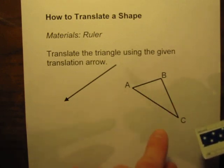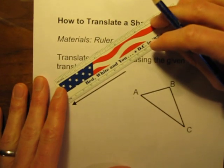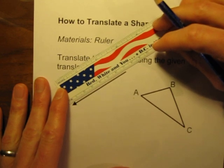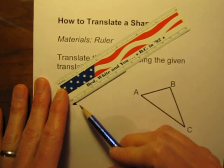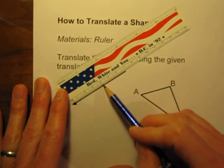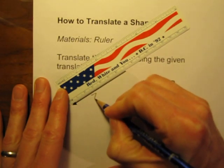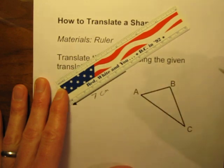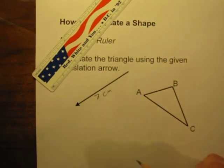So the first thing I want to do is I want to see how far am I going to move this triangle. So I'm going to measure the length of this arrow. And according to my ruler here, and I know you probably can't see these numbers, but it looks like it is seven centimeters long, is the length of this arrow. So I'm going to move this triangle seven centimeters in this general direction.